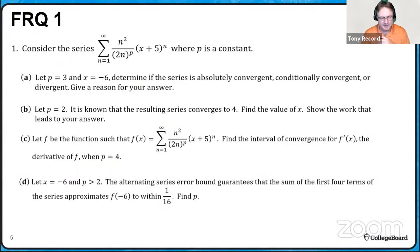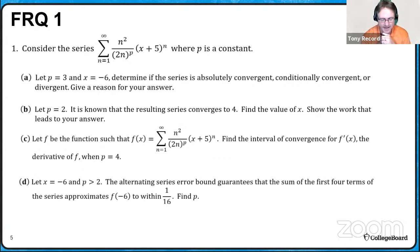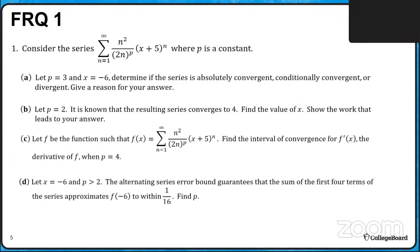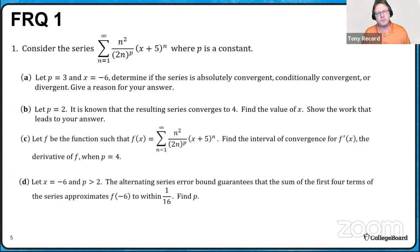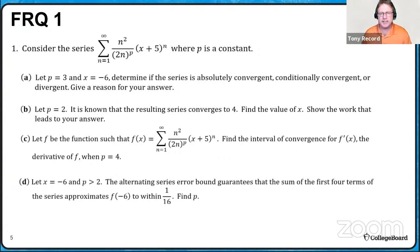Our first free response question. We're going to consider this very interesting series: the summation as n goes from one to infinity of n² over the quantity (2n)^p times (x+5)^n. We know that p is a constant. It has lots of different parts that will invoke many different series tests, and we'll focus on the ones that appear more frequently on the AP exam, discussing the conditions they must follow.